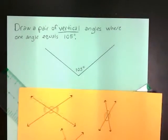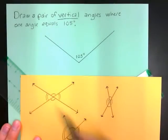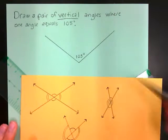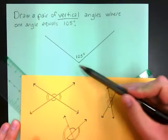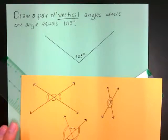But I know that when I have vertical angles, it should look like two lines are crossing each other. And right now I just have an angle. My angle is the right measure, but I don't have two lines that are crossing each other.